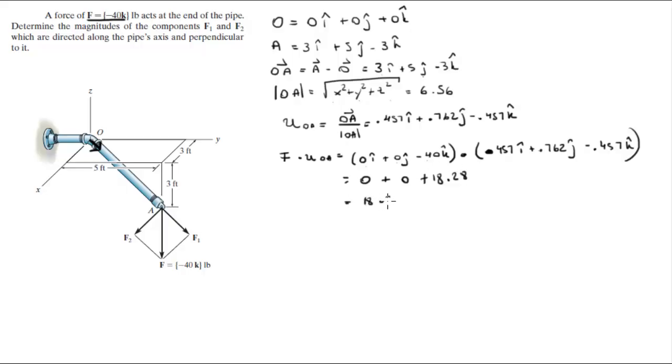Which will make this projection 18.28. This is this force right here F1, 18.28. Now they're asking you perpendicular which would be F2 and very simple. You see that this force right here is the same as I would draw this force right here and this is our triangle.